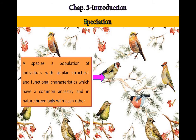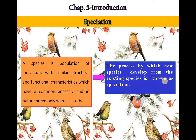What is exactly a species? A species is a population of individuals with similar structural and functional characteristics, which have a common ancestry and in nature breed only with each other. The process by which new species develop from existing species is known as speciation.